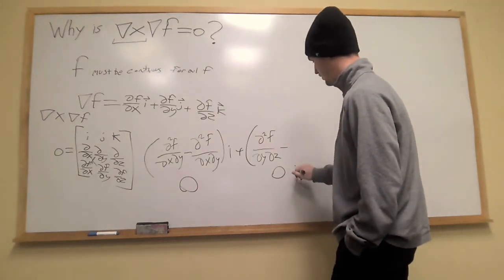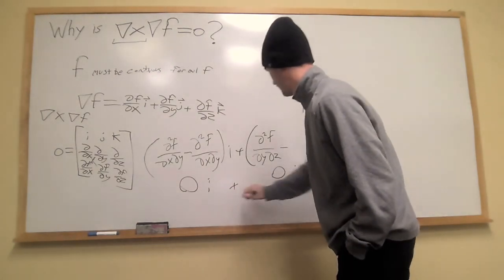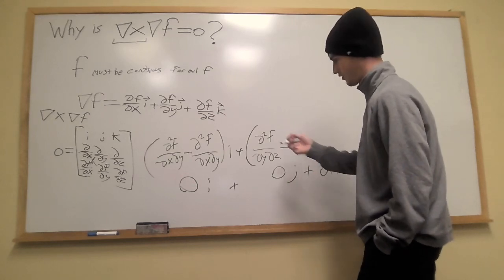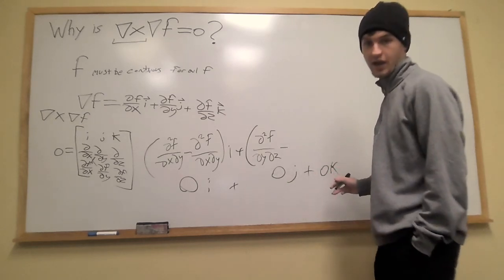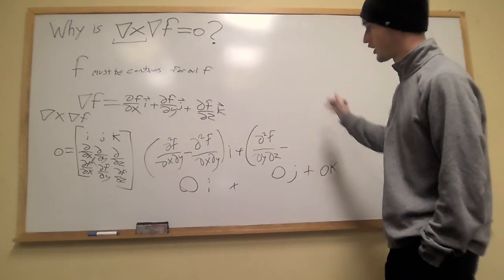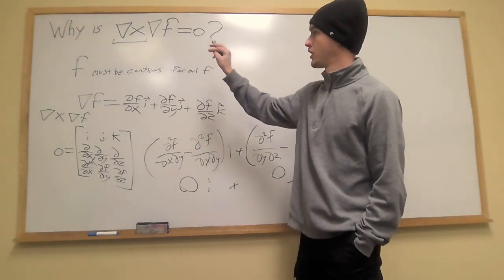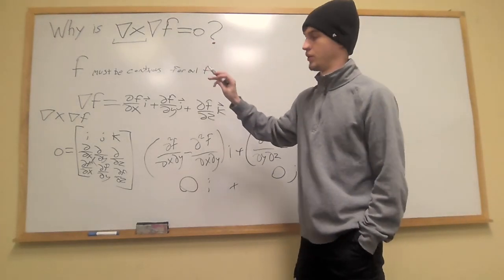And what we get is zero i plus zero j plus zero k. You can do the rest of the cross product, it's going to get zero. And this is why it always returns zero vector when you take the curl of the gradient of a scalar field.